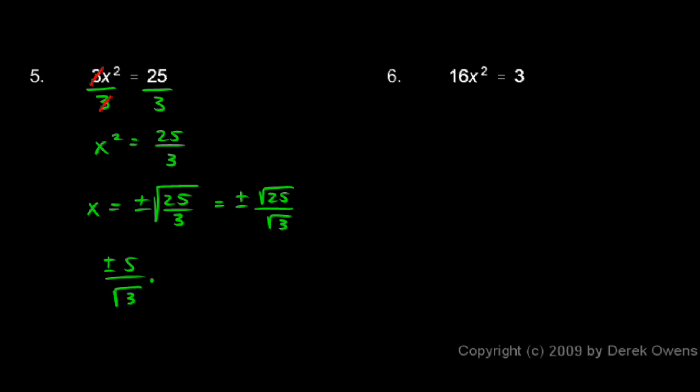To get the radical out of the denominator, I'm going to multiply by the square root of 3 over the square root of 3. Now the square root of 3 over the square root of 3 is just 1, so I haven't changed the value — I'm just multiplying by 1. That allows me to multiply these two fractions together and get rid of the radical in the denominator, giving us a rational number in the denominator. This process is sometimes called rationalizing the denominator.